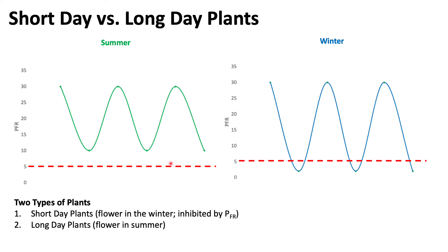Looking at the graphs of short day versus long day plants, in summer we have high levels of phytochrome far red during the day — the peaks represent the day and the valleys represent the night. During those long summer days, a lot of Pfr is produced, and during the short nights, Pfr does not have enough time to fully degenerate back into phytochrome red, so it does not fall below the threshold point — say, a level of five.